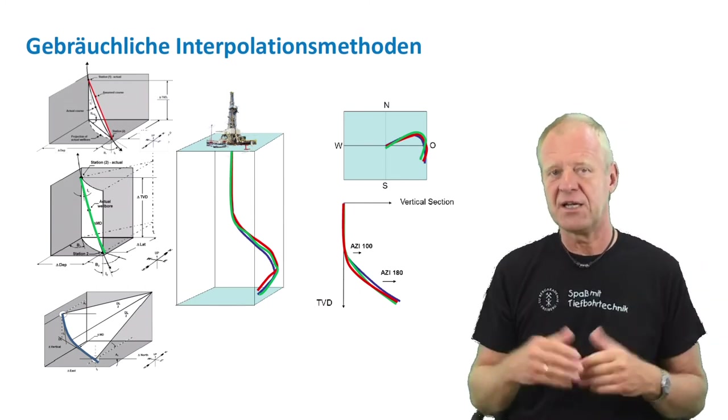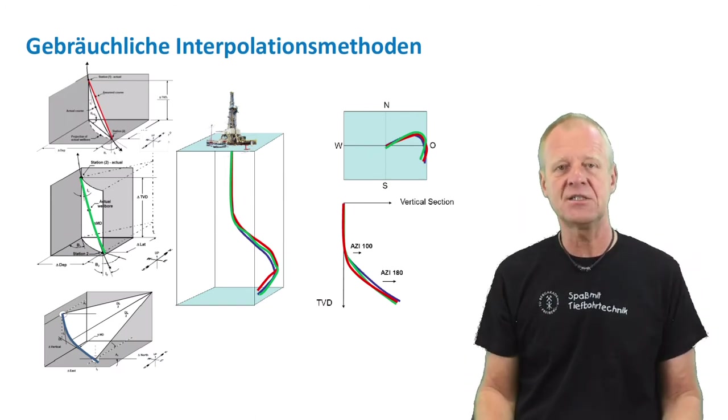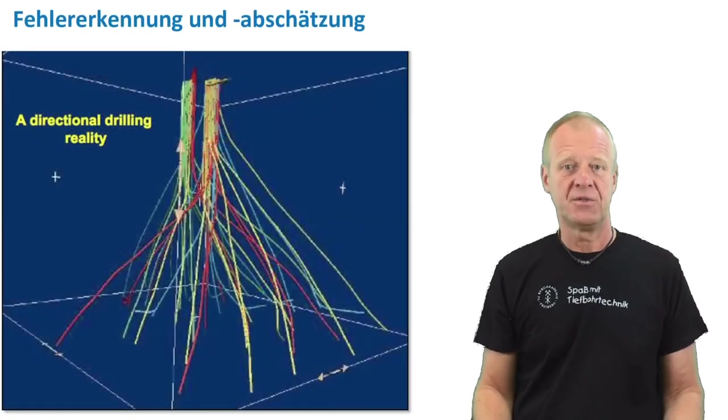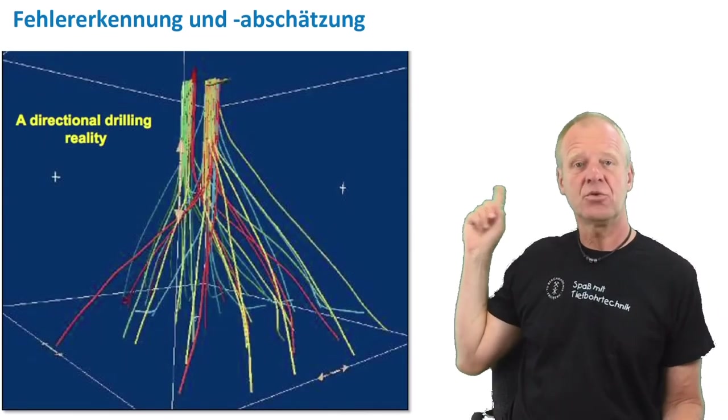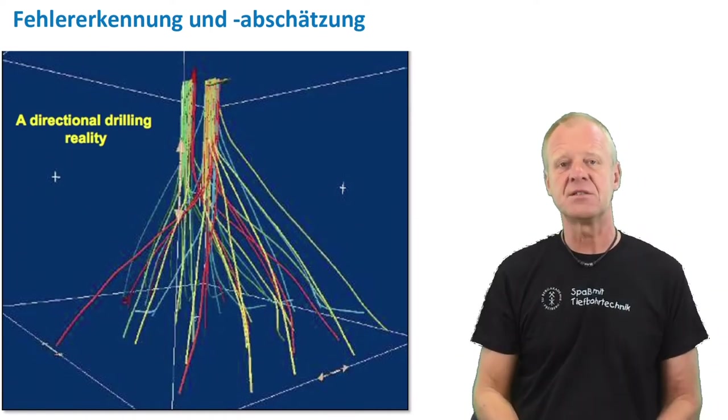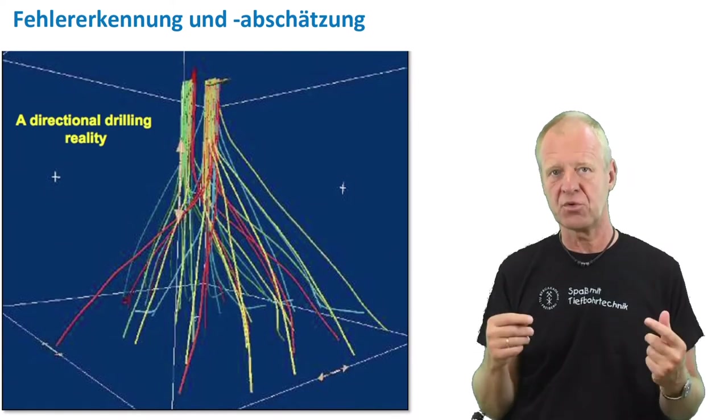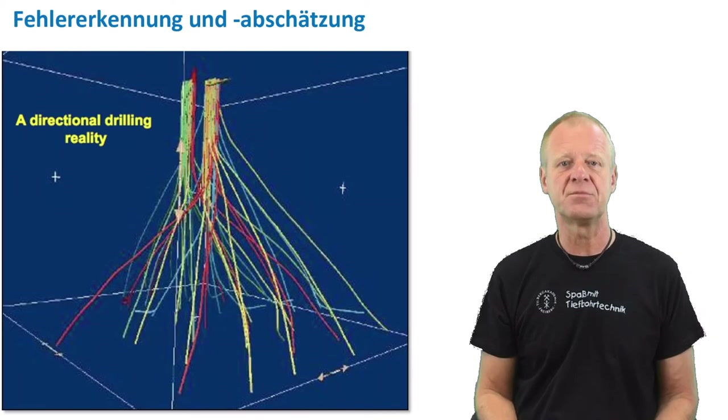Now you might think this is not very relevant for a single borehole. Who cares if we have a few meters higher or lower or left or right. But there are many fixed offshore platforms in the world which have already drilled dozens of wells in different directions. If we now want to drill a new well in this cluster, we have to take care so that we do not accidentally hit an existing producing well.